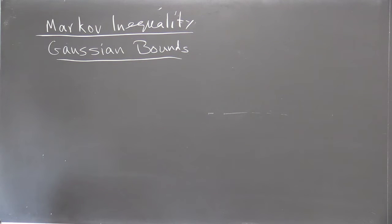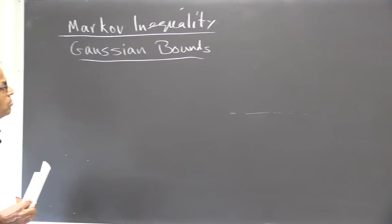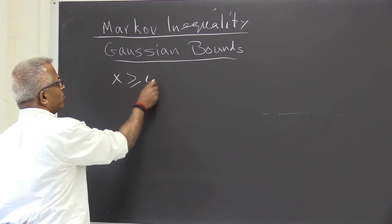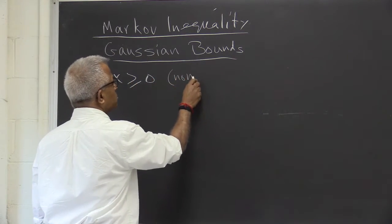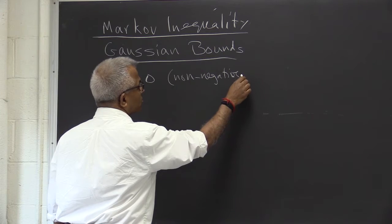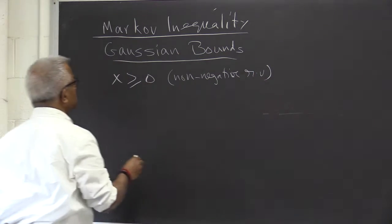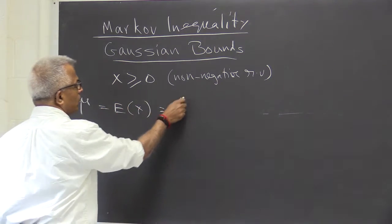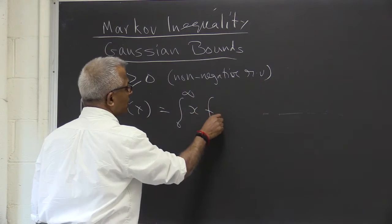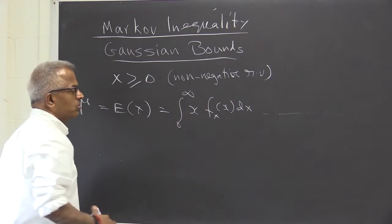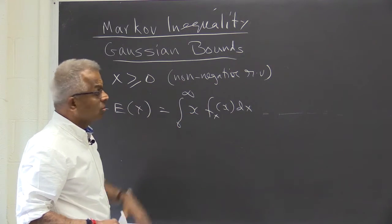Let us look at Markov inequality and we will use that to derive some bounds for a Gaussian random variable. We will start with a non-negative random variable — x is non-negative, meaning x only takes non-negative values. In that case, the expected value of x by definition is the integral from 0 to infinity of x times f_X(x) dx, where the lower limit is 0 because all values are non-negative.